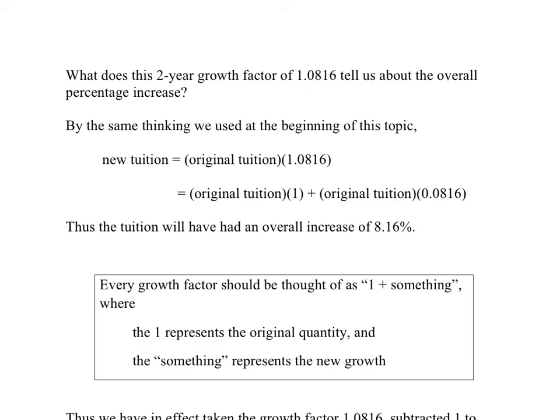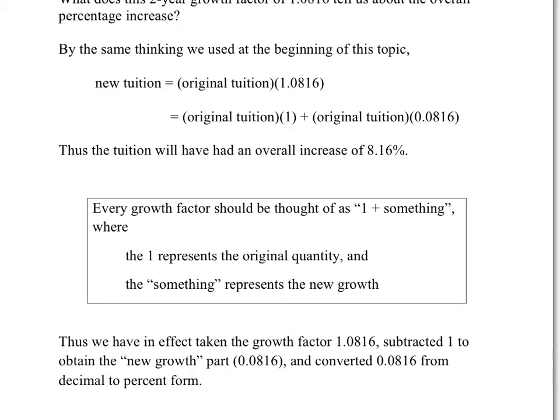Every growth factor should be thought of as 1 plus something. The 1 represents one copy of the original quantity, and this something here, after the plus, represents the new growth. Thus, what we've just done is, in effect, to take the growth factor 1.0816, we've subtracted the 1 from it to obtain the new growth part, just the 0.0816, and we've converted that 0.0816 from decimal to percent form.